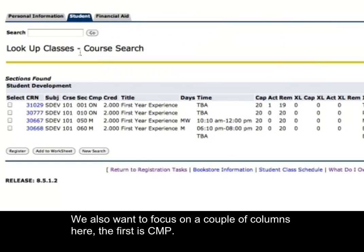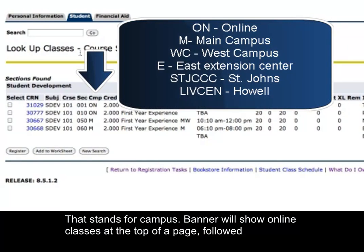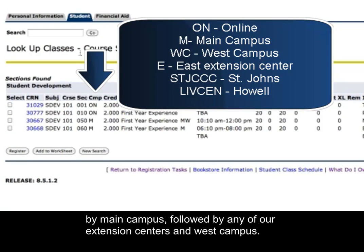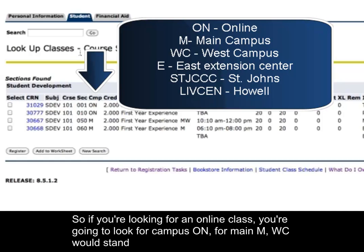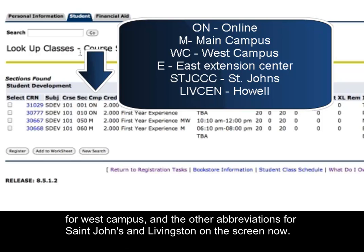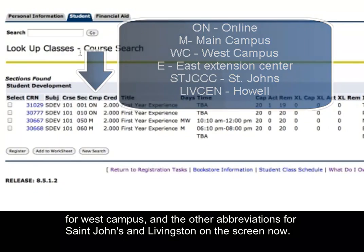There are a couple of important columns to focus on. First is CMP, which stands for Campus. Banner will show online classes at the top of the page, followed by Main Campus, then any Extension Centers, and West Campus. If you're looking for an online class, look for Campus ON; for Main, it's M; WC stands for West Campus; and the other abbreviations for St. John's and Livingston are shown on screen.